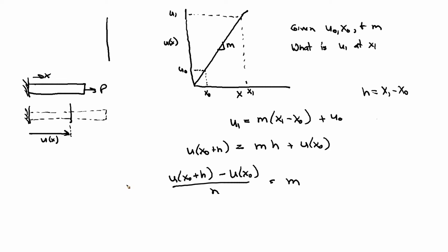I'm going to take the limit of both sides as h goes to zero. What is this thing? By definition, I'm taking the limit as this goes to zero. It's the derivative, right? It's the derivative of u with respect to x.